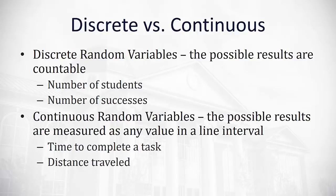That's different than a continuous random variable where the possible results are measured as any value in a line interval. Maybe how much time it takes to complete a task or the distance traveled. With continuous random variables, the identifying factor is we could get any possible decimal as a result.